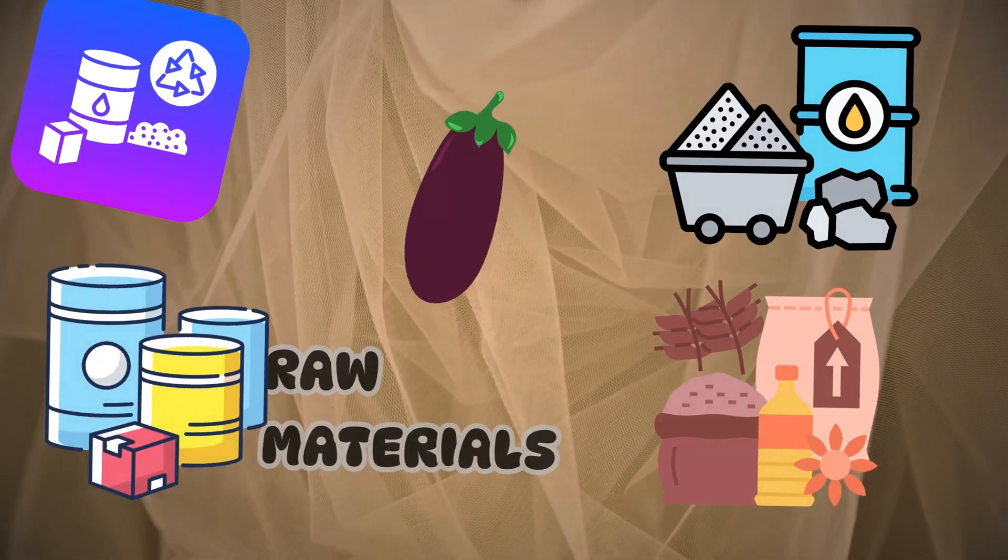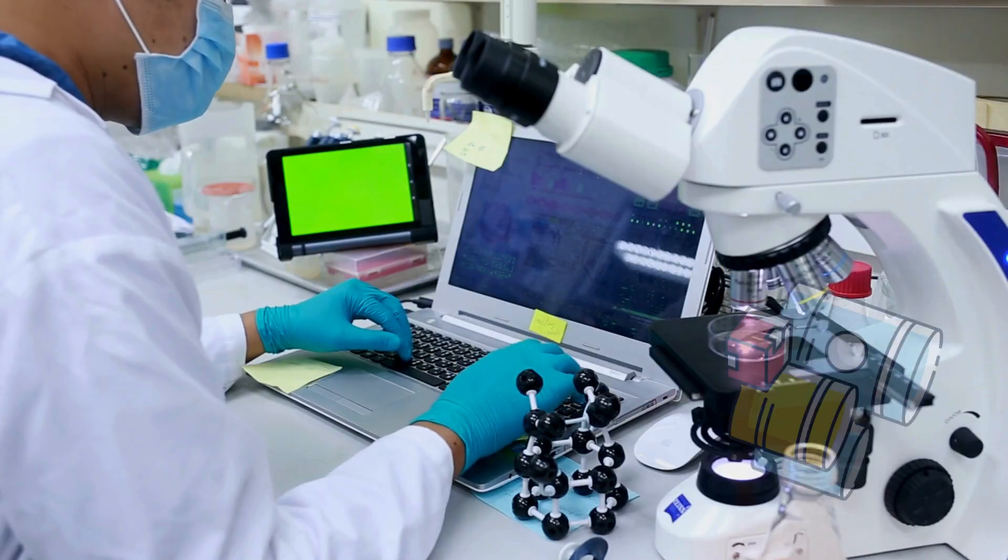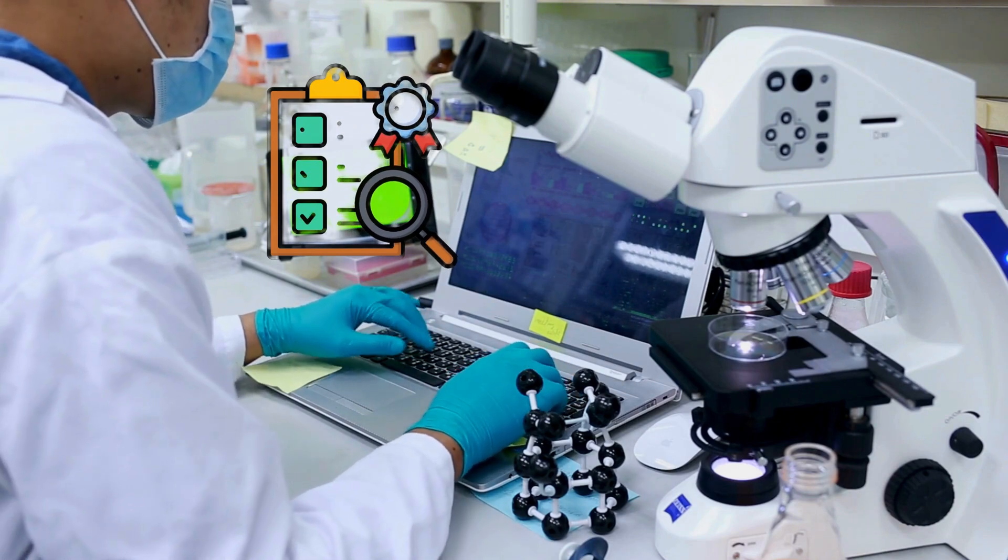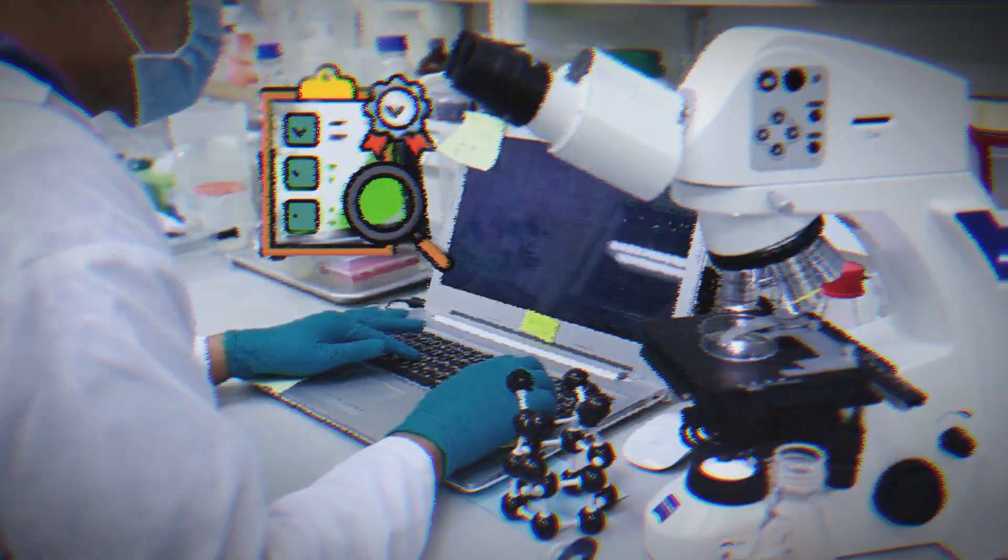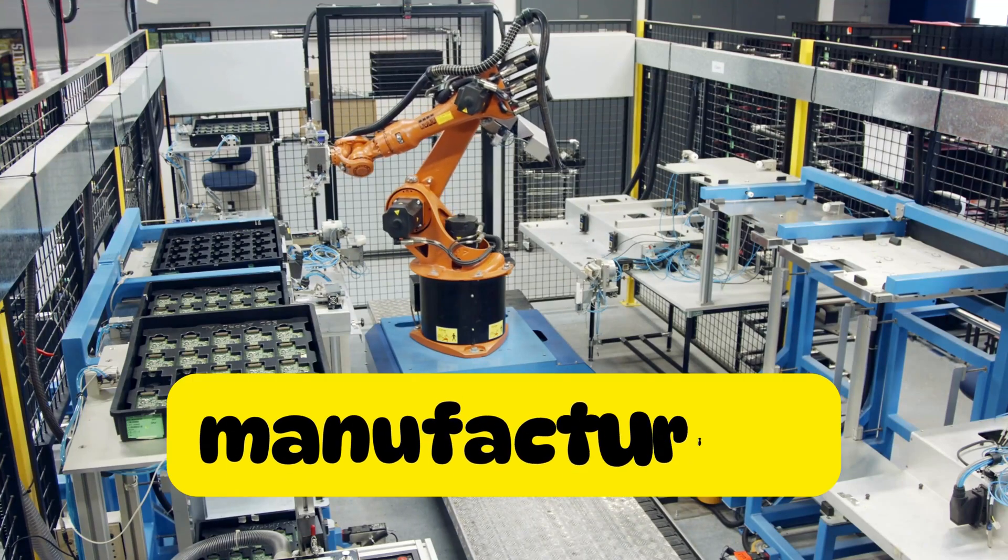Raw materials are essential. When a manufacturing company gets their raw materials, it goes directly to the QC department where they run tests and approve the raw materials for production. After approval, the manufacturing department starts to manufacture.